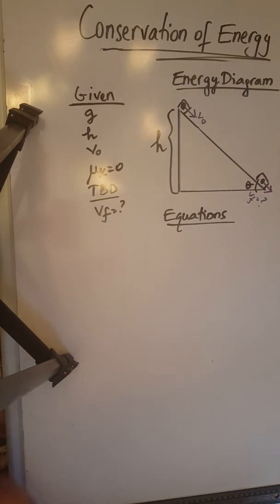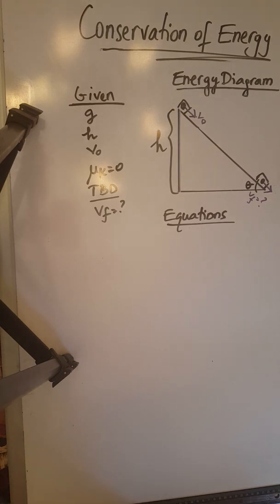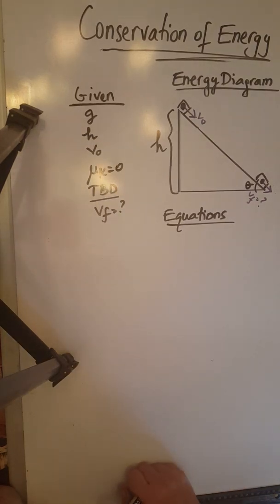As I showed in my lecture slides — the PowerPoint slides for conservation of energy — there is a strategy that must be followed when solving problems involving conservation of energy. The strategy involves picking two important points and setting the energies equal to each other in the absence of non-conservative forces such as friction or air resistance. In this case we do not have friction, so we follow that specific strategy: pick two points, find the energies at those points, and set them equal to each other.